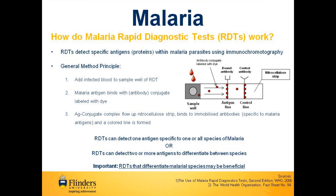Most malaria RDTs detect specific antigens produced by malaria parasites through a method called immunochromatography. The blood sample is added to the sample well of the RDT. If malaria antigens are present in the blood sample, they bind to a conjugated material, which usually includes an antimalarial antibody labelled with a dye. This antigen conjugate complex then flows along the nitrocellulose strip via capillary action and is captured by immobilised antibodies specific for particular malaria antigens, and a coloured line is formed. Some RDTs only detect one antigen specific to one or all species of malaria, while others detect a combination of antigens specific to differentiate between species.